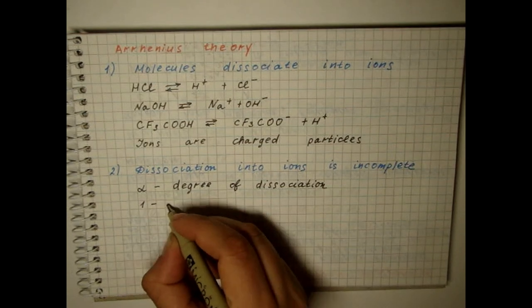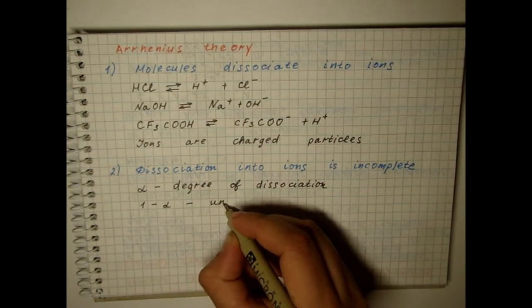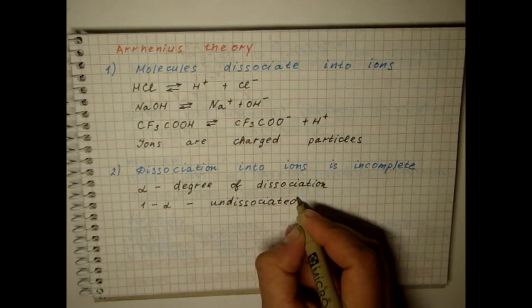The number of molecules, which is equal to 1 minus alpha, remains undissociated.